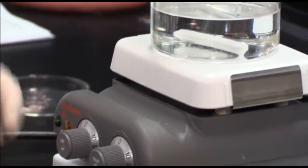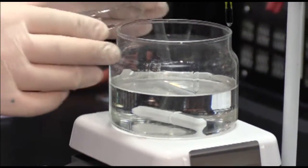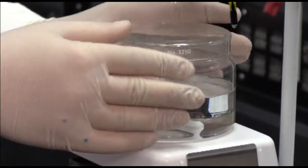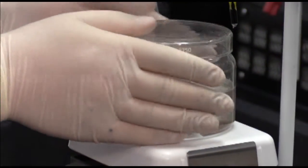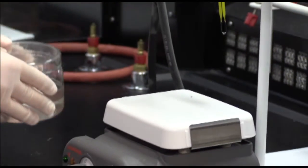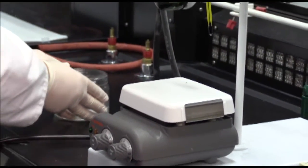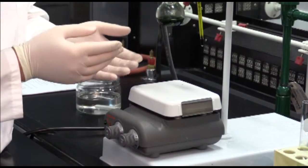Now we can take our lid for our oil bath and place it on top. You can remove your oil bath off to the side, and you're now ready to remove your round bottom flask.